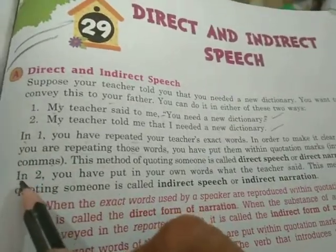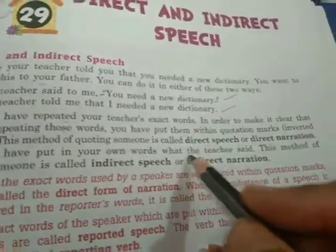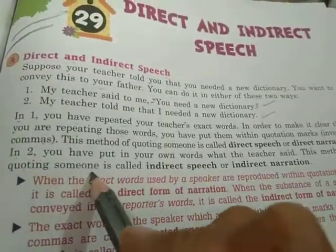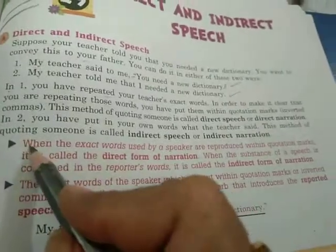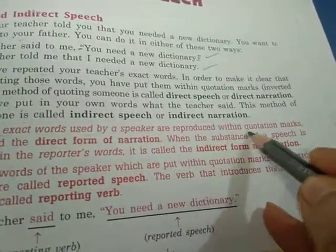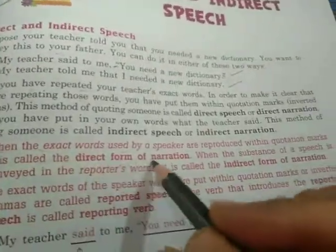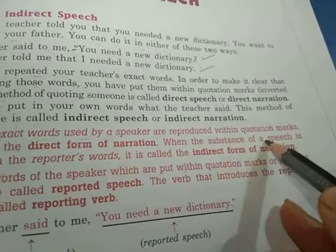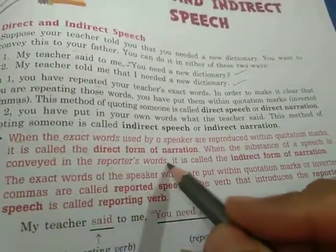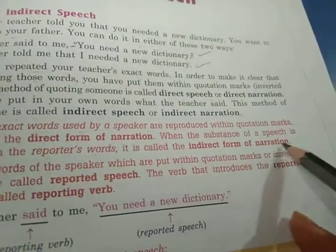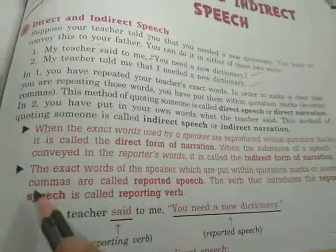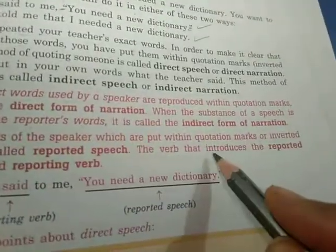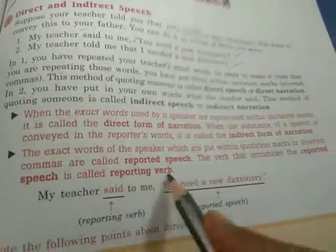This method of quoting someone using their exact words is called direct speech or direct narration. In the second method, you put in your own words what the teacher said — this is called indirect speech or indirect narration. When the exact words used by a speaker are reproduced within quotation marks, it is called the direct form of narration. When the substance of a speech is conveyed in the reporter's words, it is called the indirect form of narration. The exact words of the speaker, put within quotation marks or inverted commas, are called reported speech. The verb that introduces the reported speech is called the reporting verb.